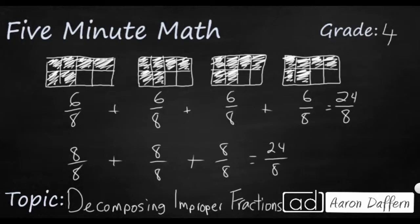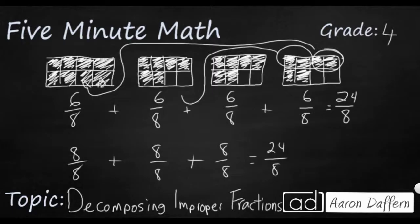Well, 8 eighths is a whole. So what if I took these two eighths right here, and I put them right here. So I filled in this one, and this one. And what if I took these two eighths right here, and I put them right here. I filled in this one, and this one. And I took these final two eighths, and I put them right here. And you see what I would have now is I would have my 3, 8 eighths.